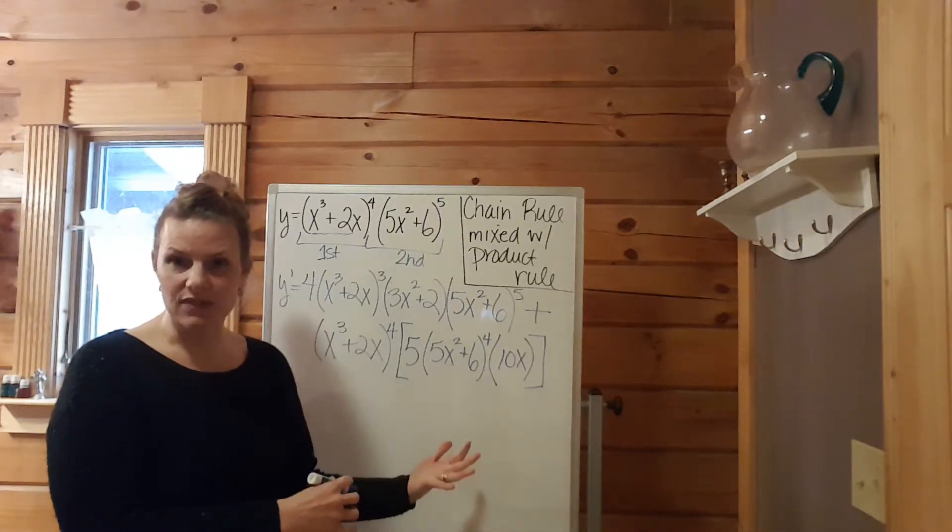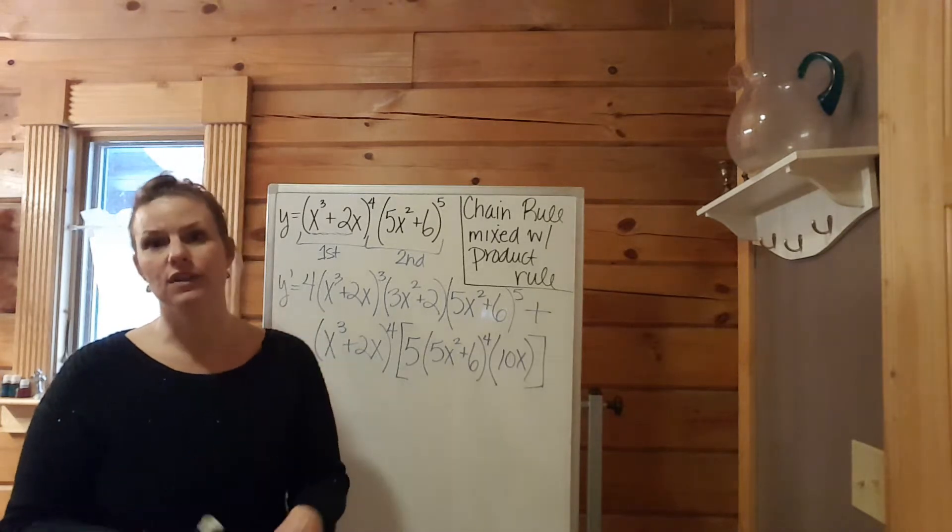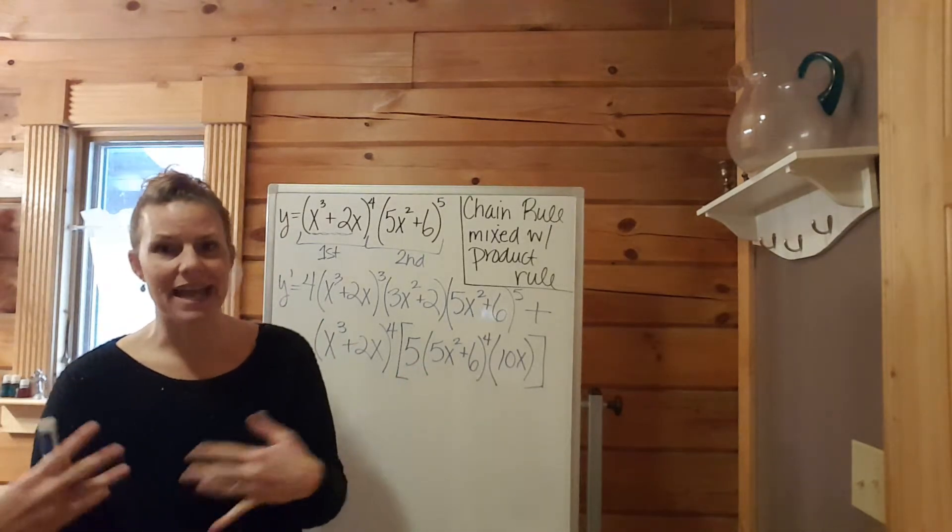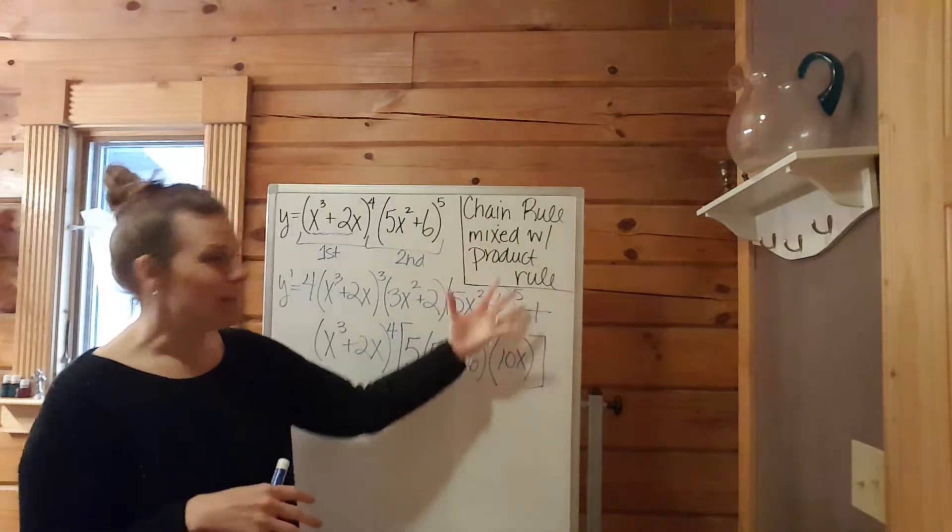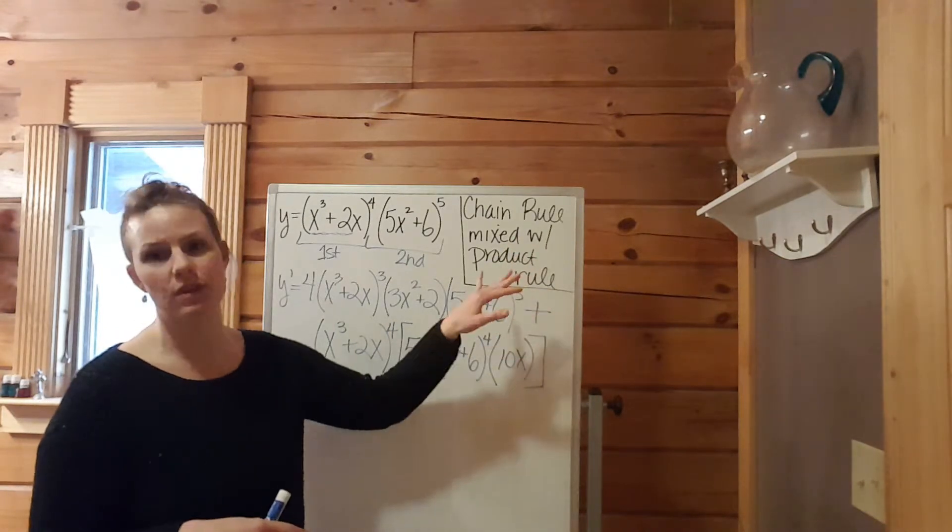Plugging a number in for x if they want you to do that, all those other things you do with a derivative. You find the slope of a tangent line, or the equation of a tangent line at a given point. I just wanted to show you the mess that occurs when they ask you to do a chain rule mixed with a product rule.